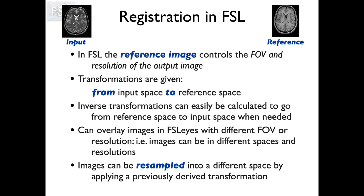We can overlay images in FSLeyes even if they have different field of view or resolutions, though that's not the case in FSLview. The native output is always going to be in the reference image space with the same field of view and resolution as the reference. We can resample any image into a different space as long as we have the transform, and we can easily calculate the inverse transform if we only have it in one direction.